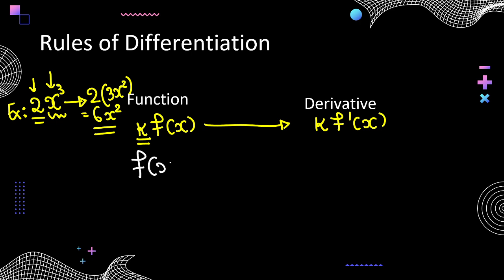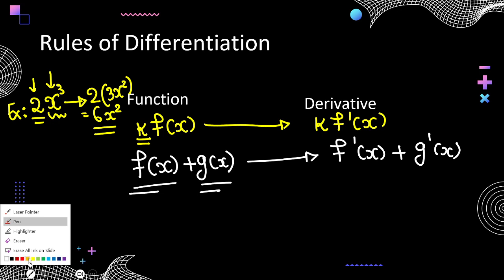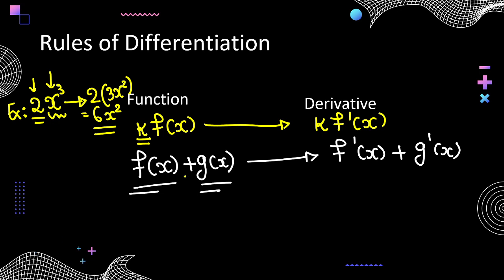For the sum and difference rule, if you have f(x) + g(x), the derivative is f'(x) + g'(x), and if you have f(x) - g(x), the derivative is f'(x) - g'(x). I request students to please solve some basic fundamental derivative problems before starting your Class 12 application of derivatives.